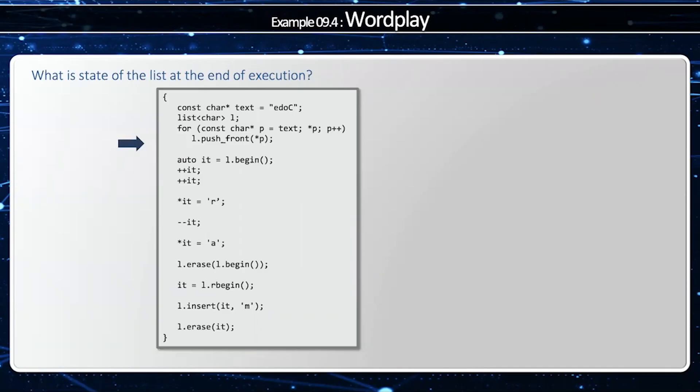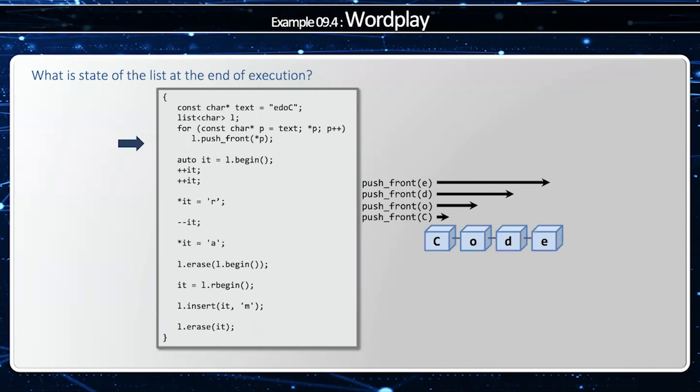The difference is with vector we primarily add and remove onto the end of the vector, but with a list we can add and remove from the middle, and we can do so in an efficient way. This video is going to demonstrate how to do that. We're going to start with the text E-D-O and capital C, and we're going to push them into the front of the list one at a time using push_front. When I use push_front, I push things in the opposite order, so E-D-O-C becomes C-O-D-E.